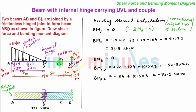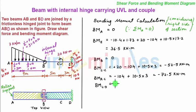Next we move to point D. As we see, at point D there is a moment Md acting, so we take a section towards the left of D and very near to it. Considering the right-hand side of the section, we see there is a clockwise moment of 104 kN·m magnitude. So we have minus 104 kN·m as the bending moment at D. With this, our bending moment calculation is complete.